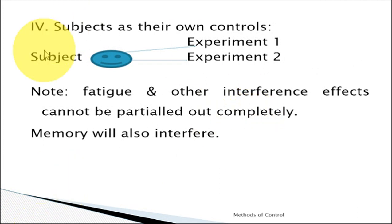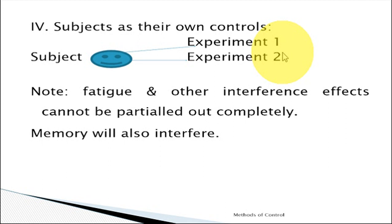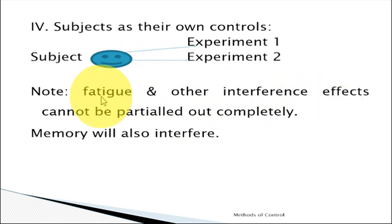The fourth method is using the subject himself or herself as the control. The first experiment is conducted, then after a gap, the experiment is conducted again. However, this method is not encouraged because using humans for experiments repeatedly can cause fatigue and other interference effects which cannot be partially or completely controlled. There may also be memory effects, and human rights issues may also arise. However, theoretically, this method of control exists.